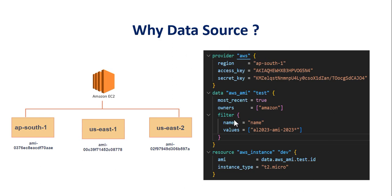As you can see in this image, I have declared a data block for the AMI ID — data source 'aws_ami' with local name 'test'. Owner is set to amazon and I have a filter for the image name. In the resource block I have specified 'ami = data.aws_ami.test.id'. That is how you reference a data source in a resource block: data dot provider dot local_name dot attribute.